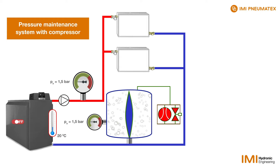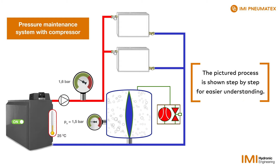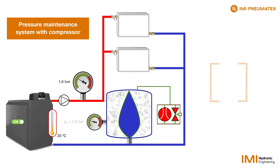If the boiler is now switched on and the water is heated, it expands so that the pressure increases to, for example, 1.6 bar. This pressure forces the water into the vessel and compresses the gas on the other side of the butyl bag to 1.6 bar. If the temperature in the system rises further, the pressure rises to 1.8 bar.